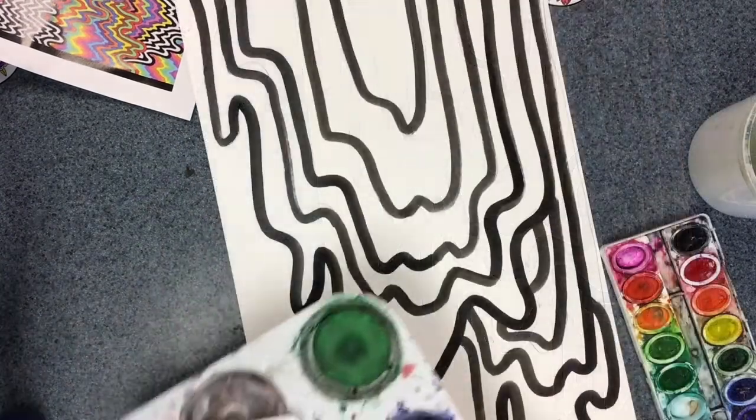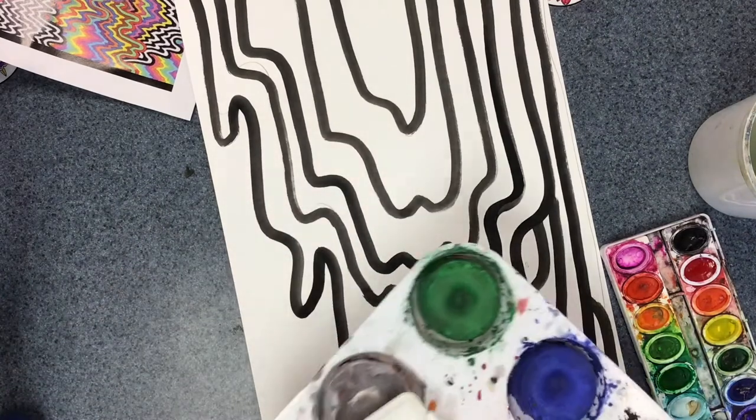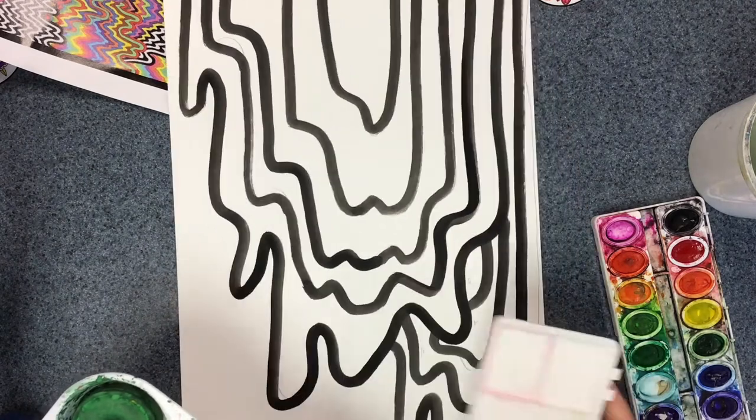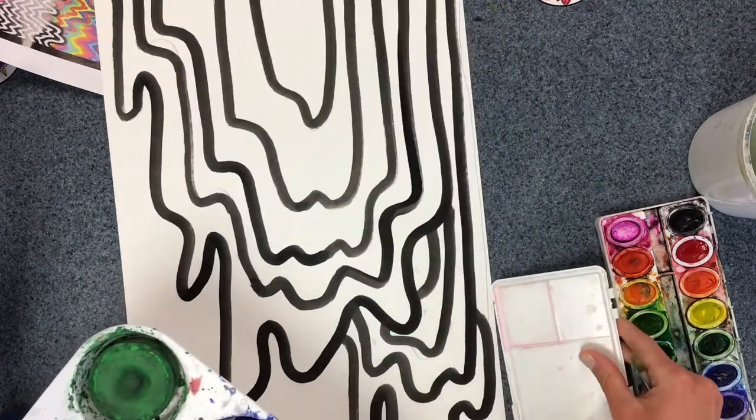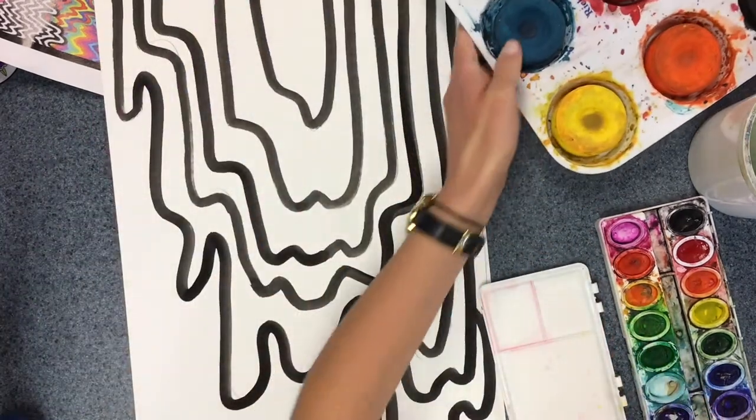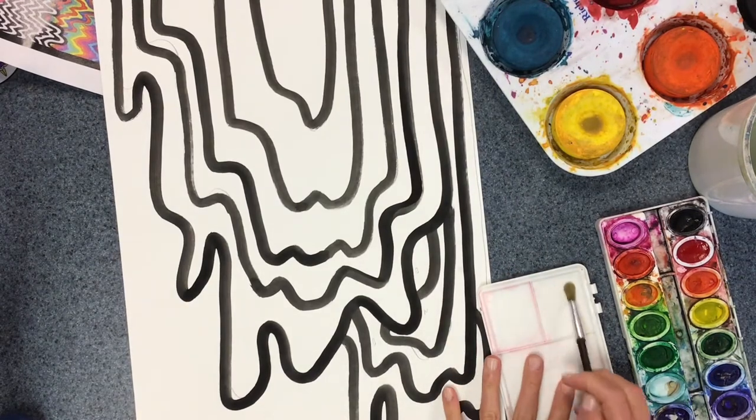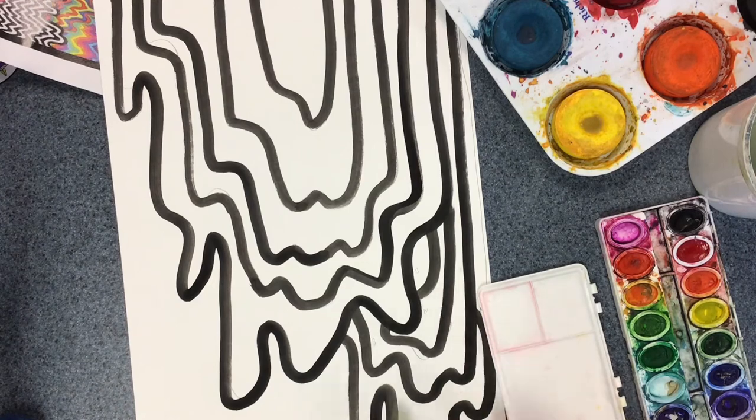All right, now that we're ready to paint, whether you're using the tempera cakes or the watercolors, we're going to be using a little mixing tray. Not really to mix new colors, but so that we can put our color in here and make sure that it's uniform, all the same color for our whole drip.